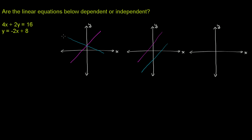Or you could have two lines that actually end up being the exact same line. So: these are lines with different slopes that intersect; these are lines with the same slope but two different lines with different y-intercepts; and these are two lines with the same slope and the same y-intercept — they're essentially the same line.